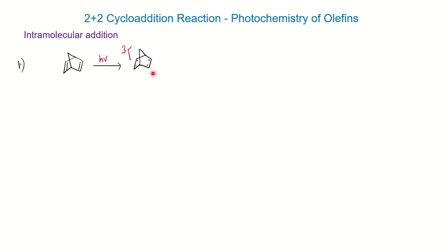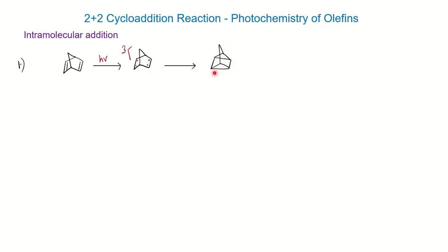These free radical formations will combine in a way that gives you a new molecule. You can see horizontally the two will join like a 2+2 cycloaddition reaction, and it will give you the product after intramolecular addition.